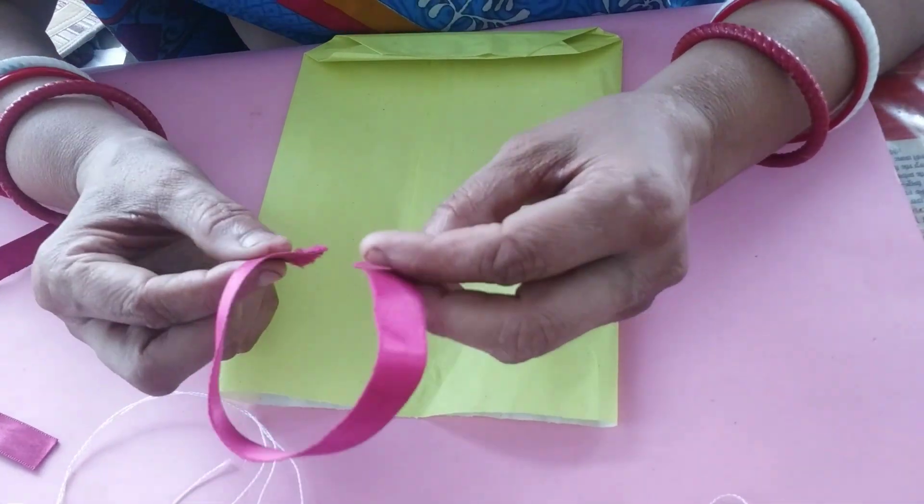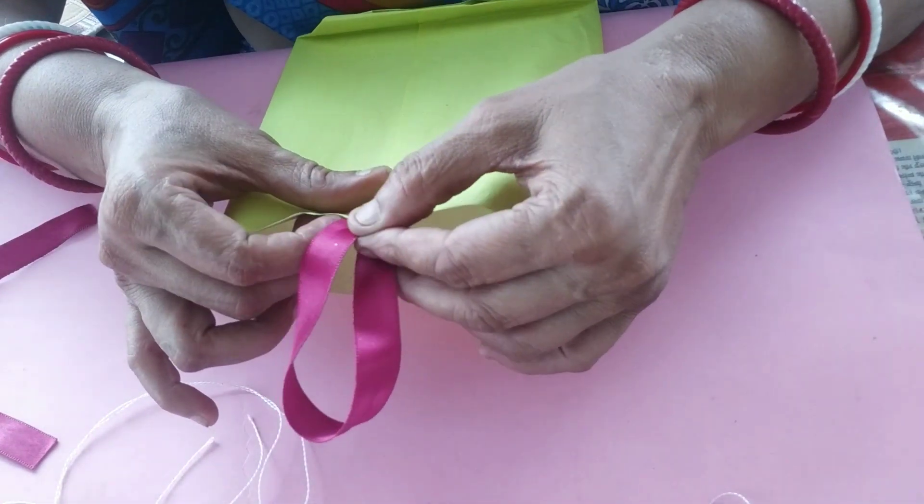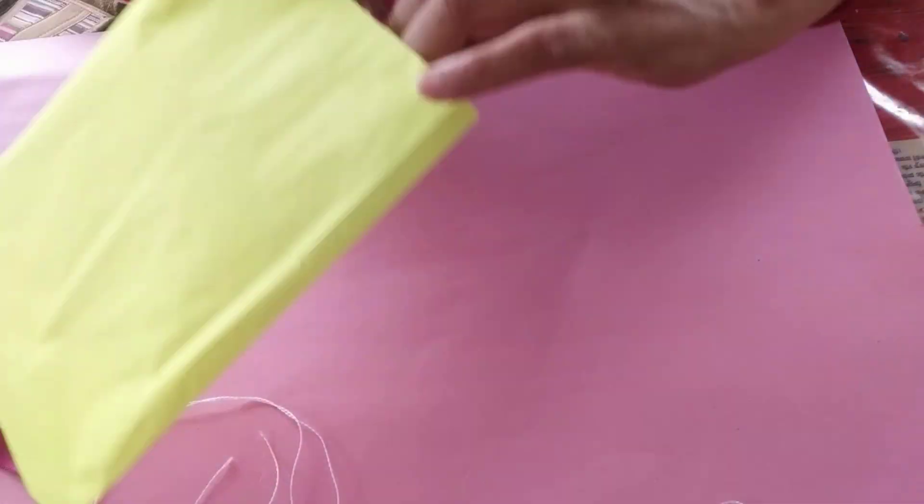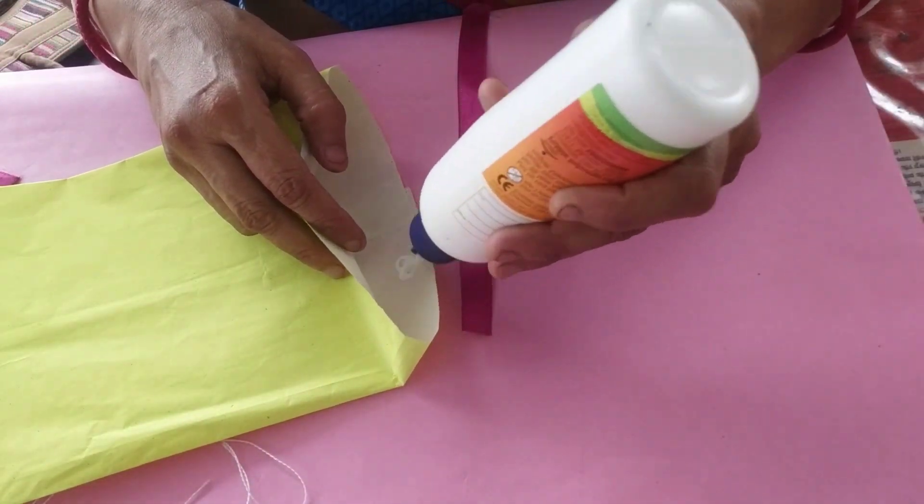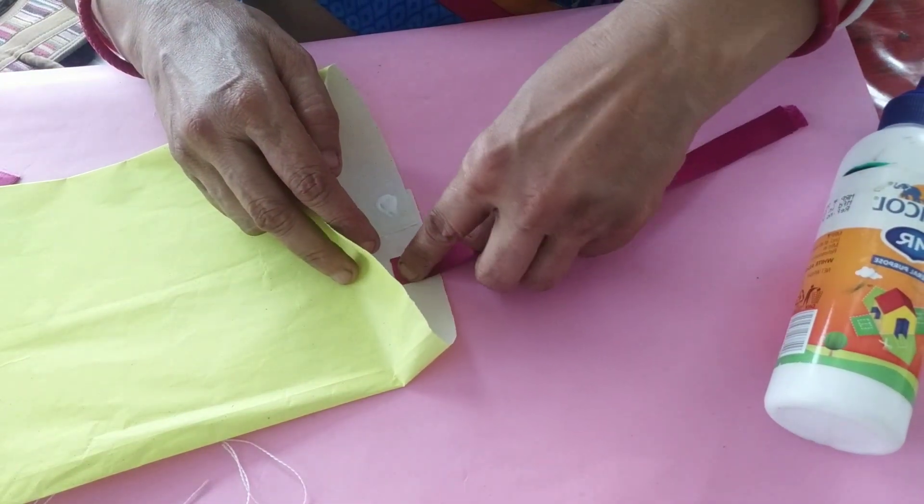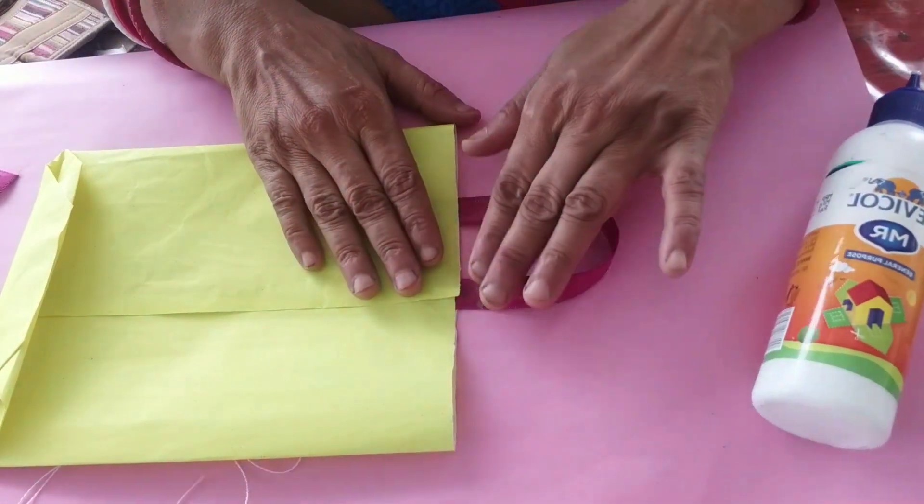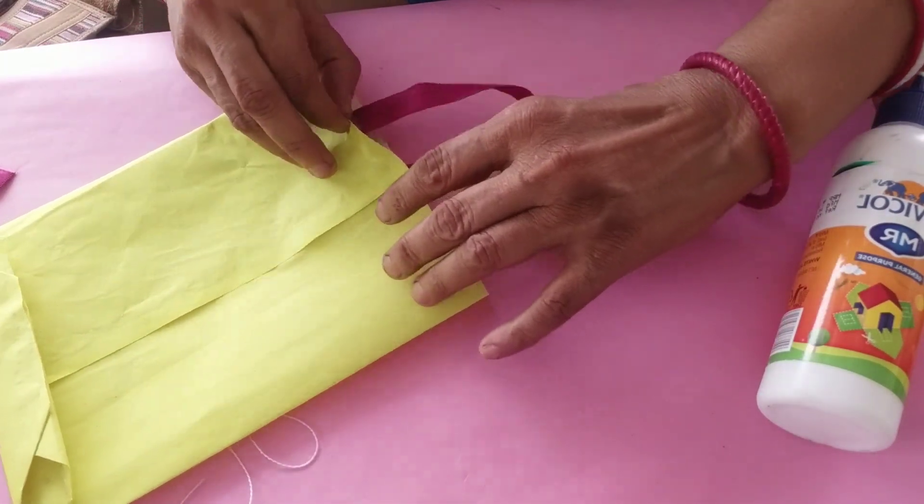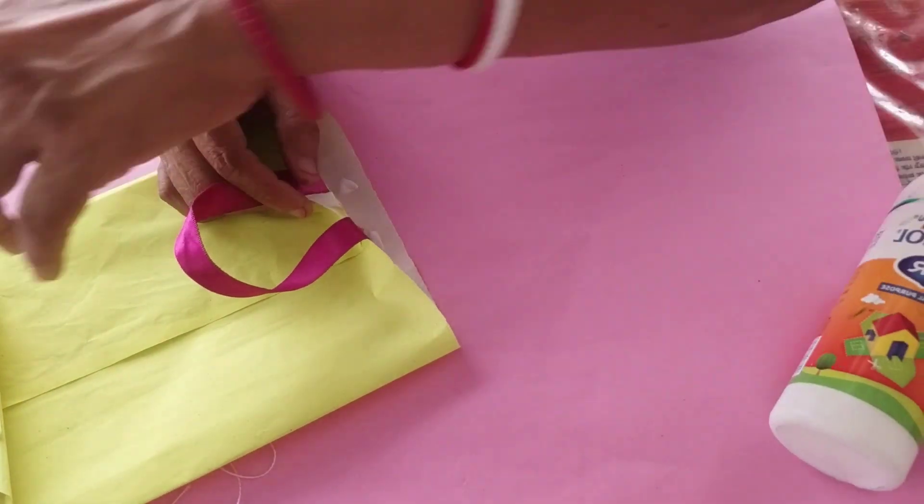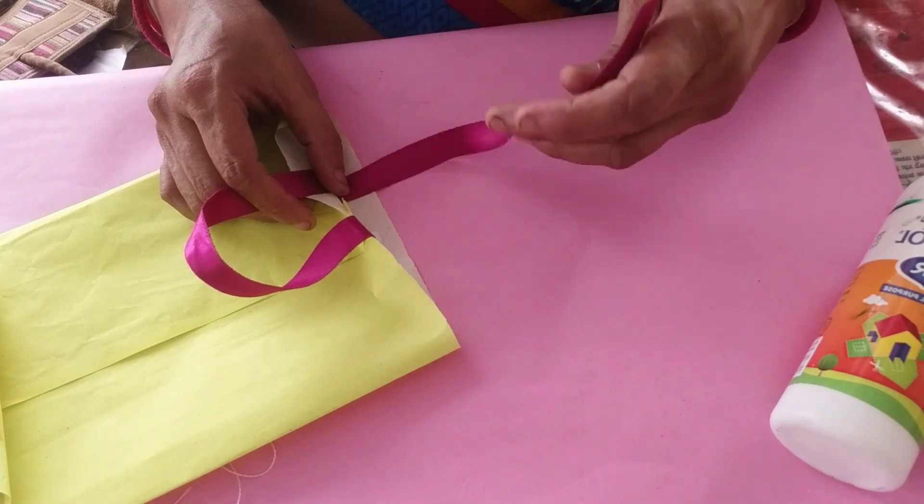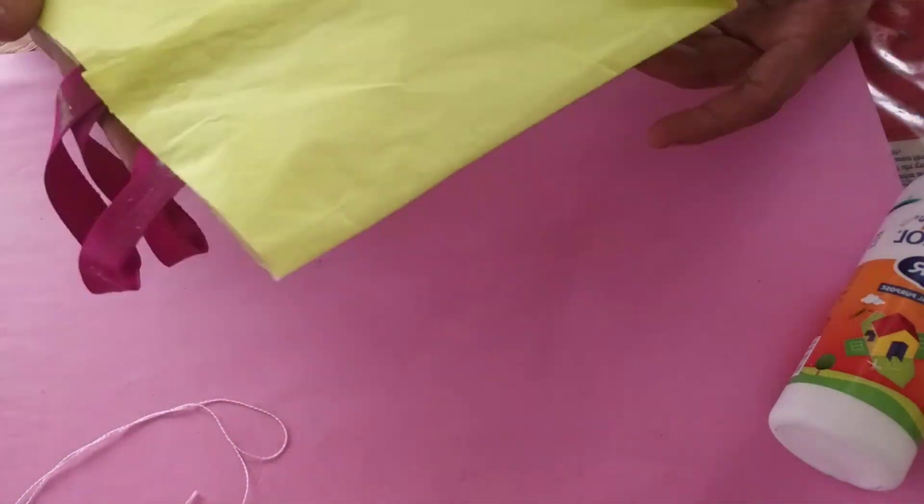If you require a handle on your paper bag, then use this type of ribbon, thread, wool, anything. You can stick it by glue. Just take it, open this, and apply some glue. And just stick. Again, fold it this side. Open this area, and same on this side here. Paste glue and stick this type of ribbon. Your paper bag with handle is ready for your use.